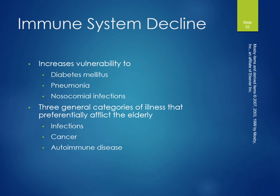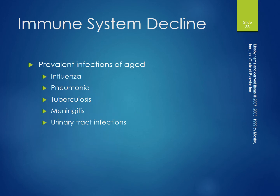Immune system decline increases vulnerability to diabetes, pneumonia, and nosocomial infections. Three general categories of illness that preferentially afflict the elderly are infections, cancer, and autoimmune disease. Prevalent infections of the aged include influenza, pneumonia, tuberculosis, meningitis, and urinary tract infections.